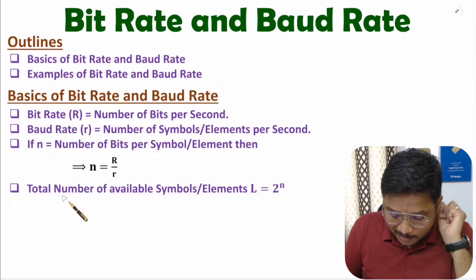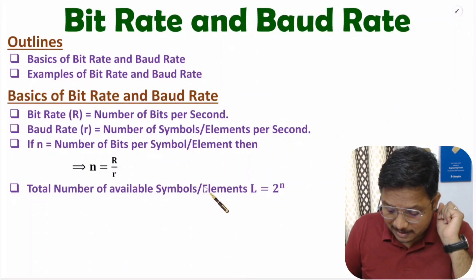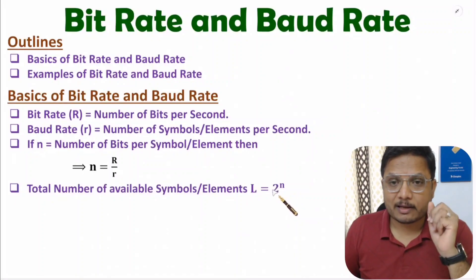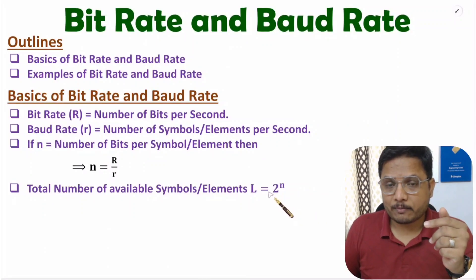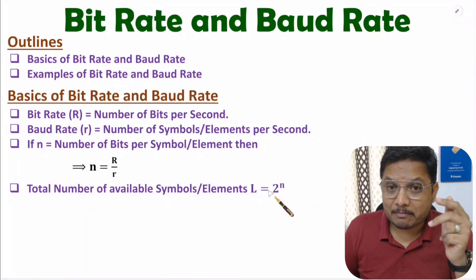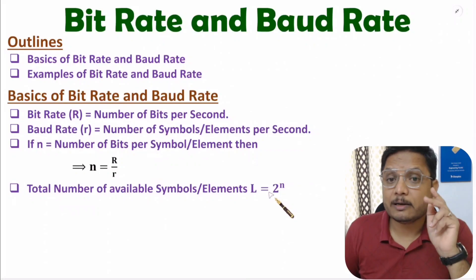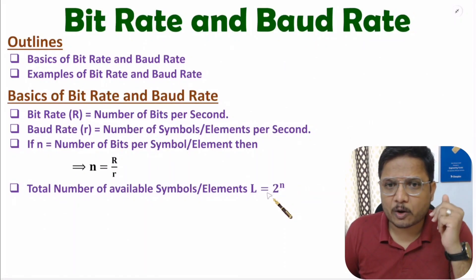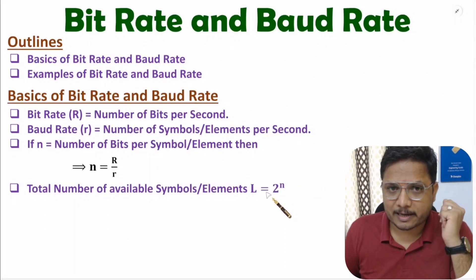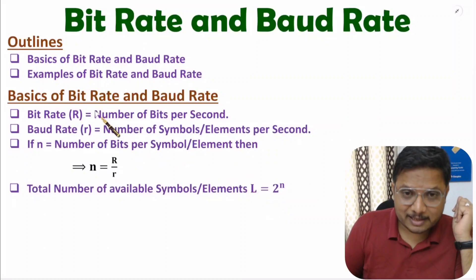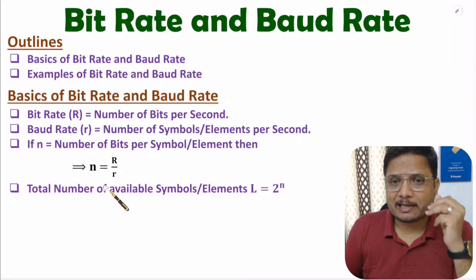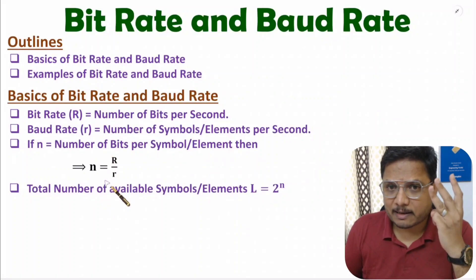The total number of available symbols, L, equals 2 to the power n. If you have n bits per symbol, then the total possible symbols are 2 to the power n, since we are talking about digital symbols. Based on this understanding, I'll solve three examples.